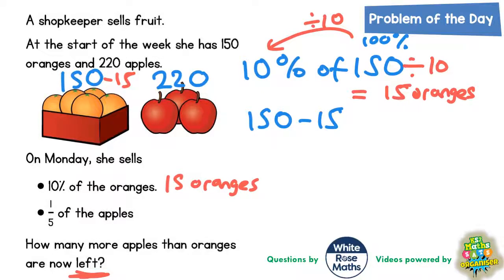You can probably do that in your head. If you take off the 10, that's 140. And if you take off the extra 5, that's 135. So she's got 135 oranges left.